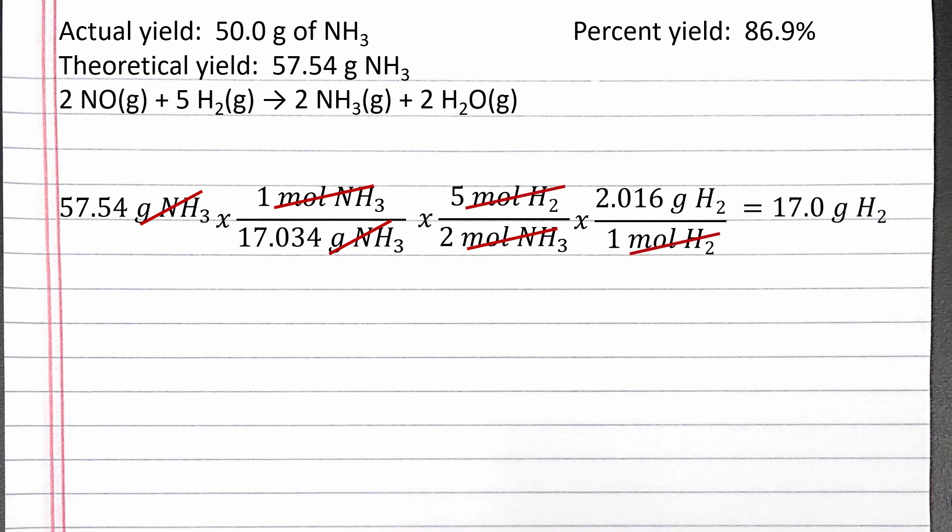Completing the calculation, we should get 17 grams H2. So we need to run our reaction with 17 grams of H2 in order to actually produce 50 grams of ammonia.